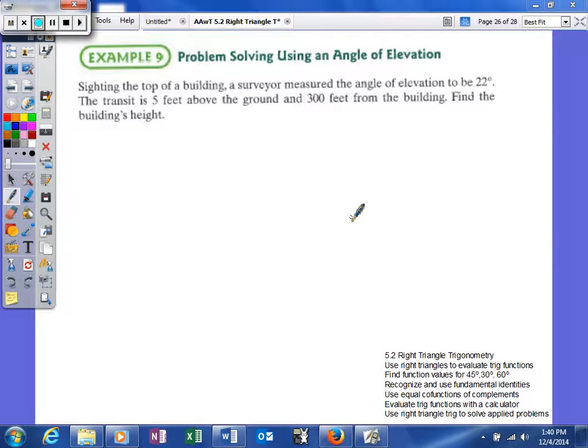Alright, the first applied problem we're going to look at is this. It says, sighting the top of the building, a surveyor measured the angle of elevation to be 22 degrees. The transit is 5 feet above the ground and 300 feet from the building. Find the building's height.